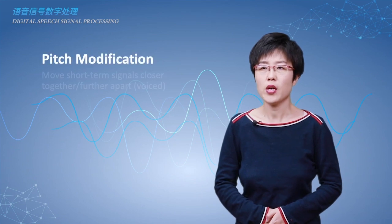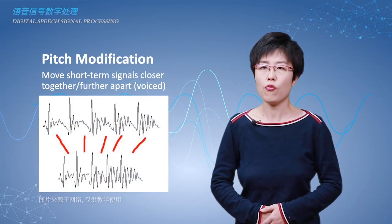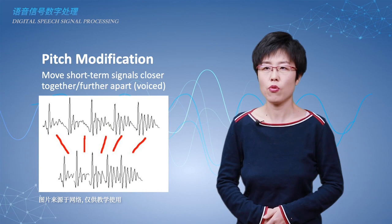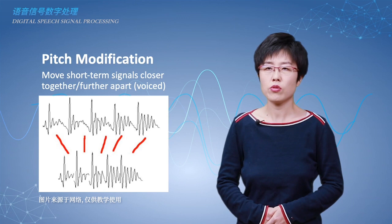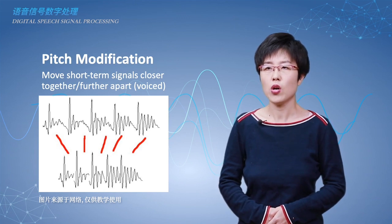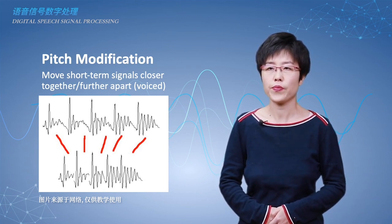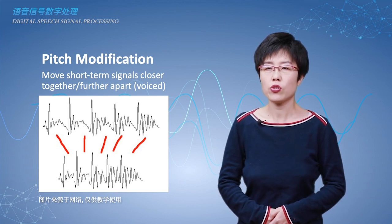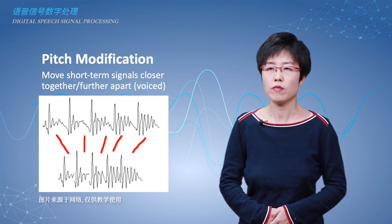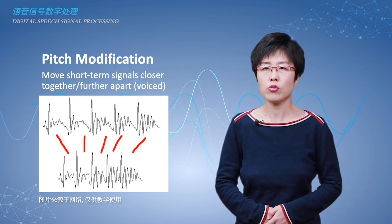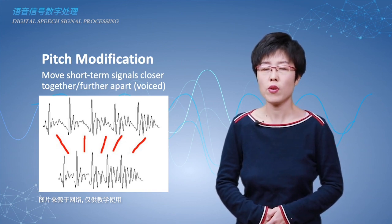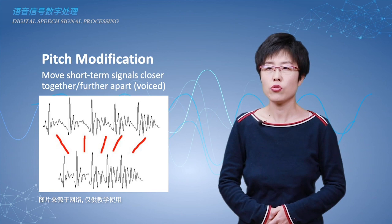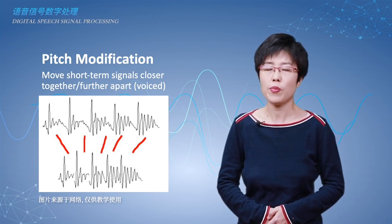Pitch modification aims to raise or lower the pitch contour for voiced speech. Through moving short-term signals closer together, we could get a high-tone signal. Through moving short-term signals further apart, we could get a low-tone signal. Therefore, the algorithm needs to mark the pitch of the voiced signal accurately in order to adjust the pitch period properly.